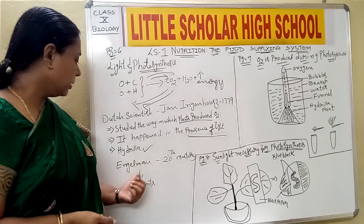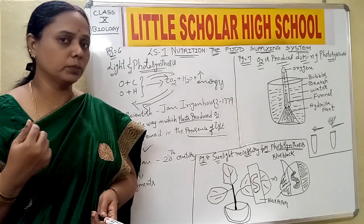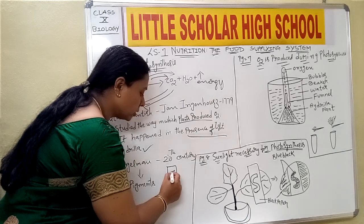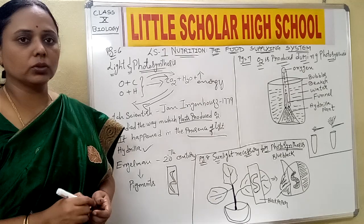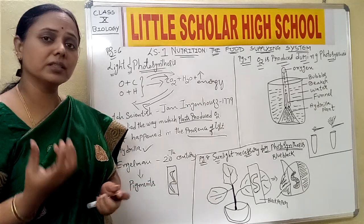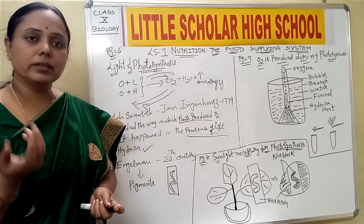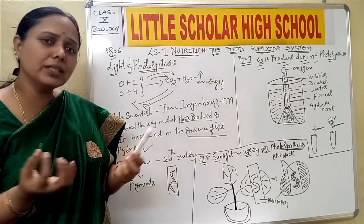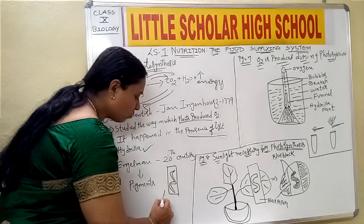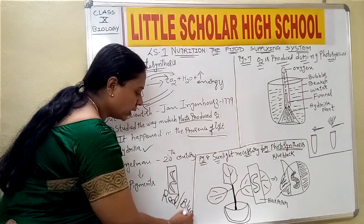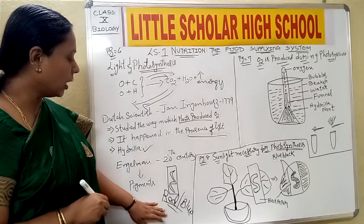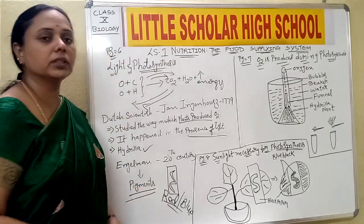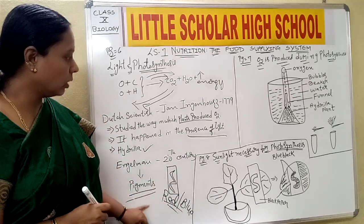In the 20th century, Engelman also worked on the concept of light. He used the strands of algae and exposed them to light — that is, the rainbow colors. He also took oxygen-sensitive bacteria and exposed them to the light. He observed that the bacteria accumulated and crowded more at the areas where red and blue rays were illuminated. This gave rise to further studies on the complex compounds called pigments.